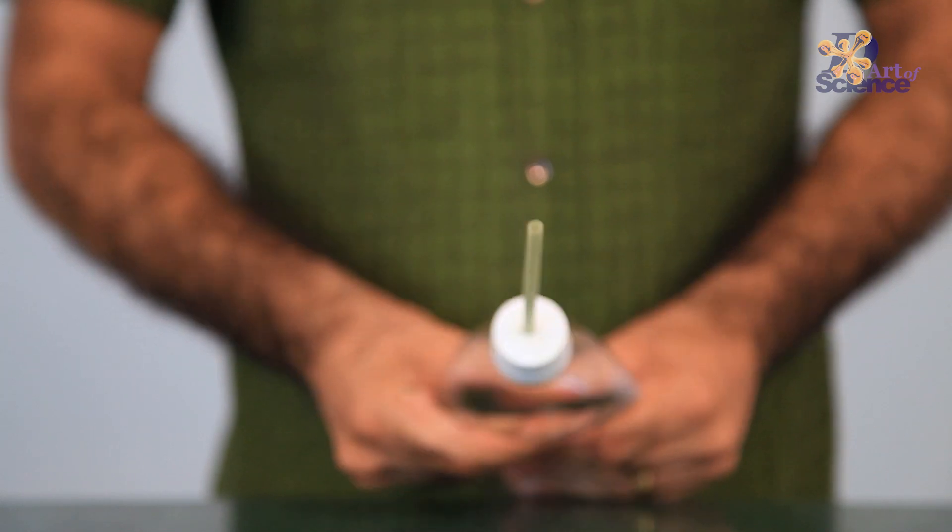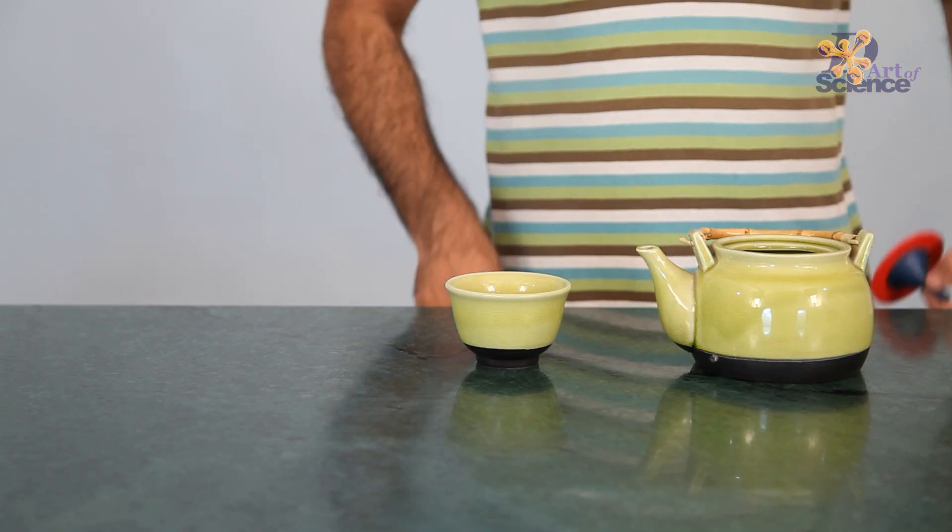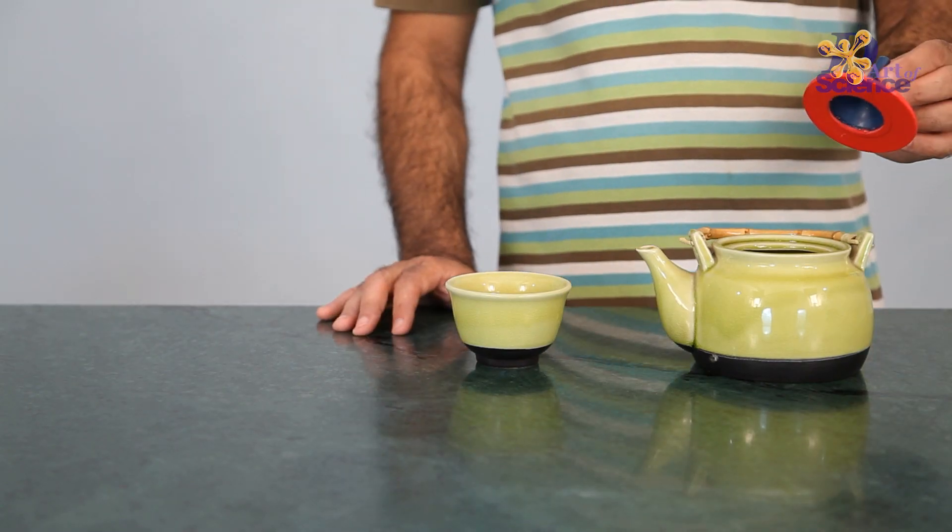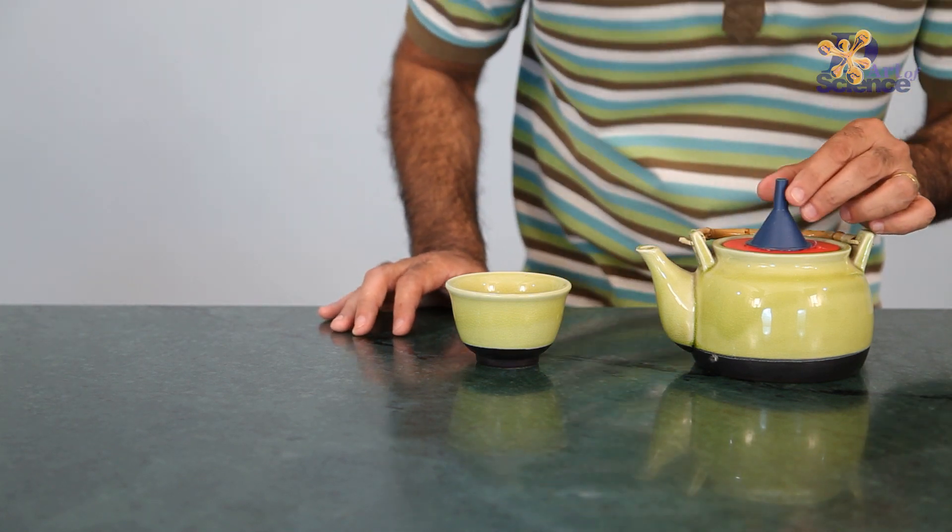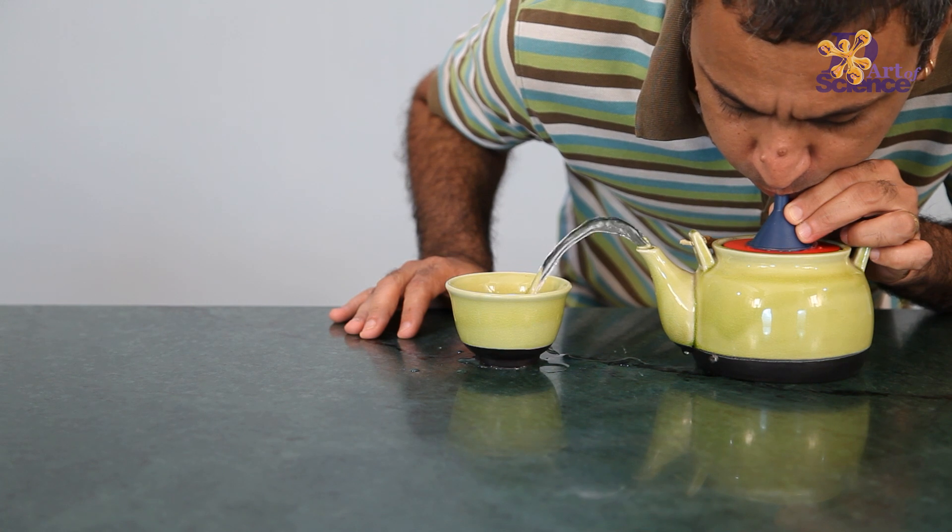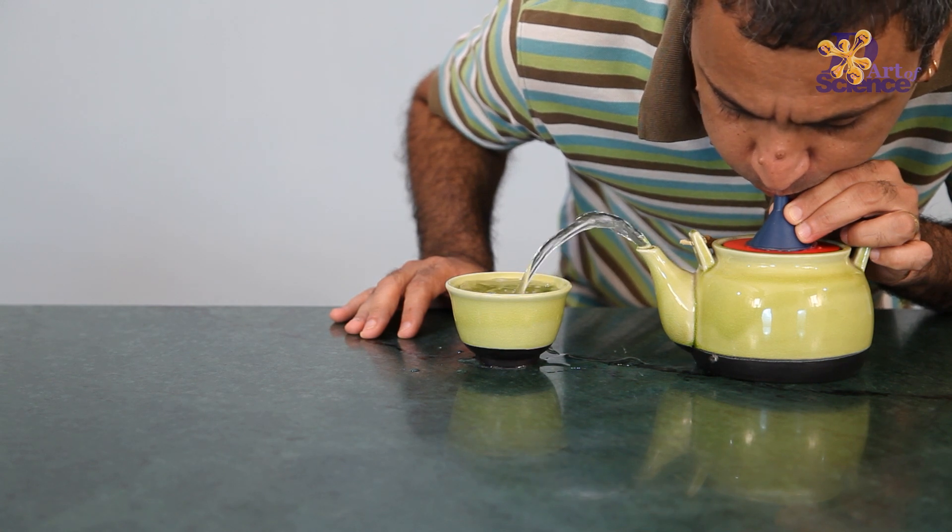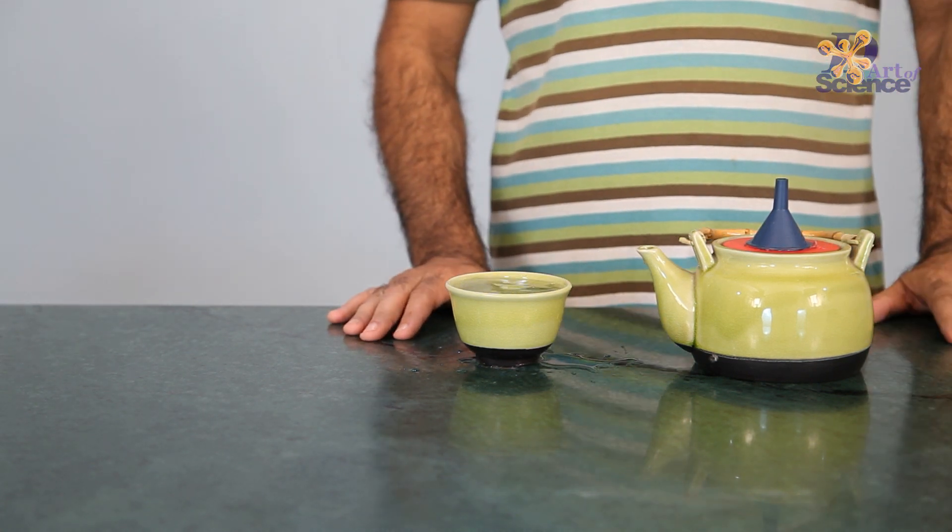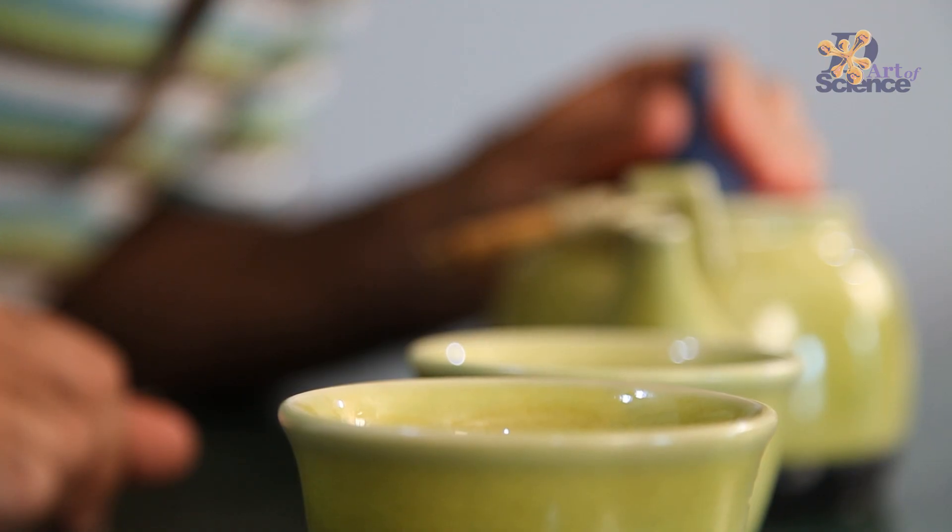And finally, combining air and water pressure, you can make this cool self-serving teapot. When you blow into the teapot, you apply pressure on the water inside. The water, now pressurized, finds its way out through the spout of the teapot.